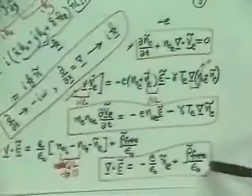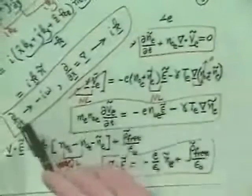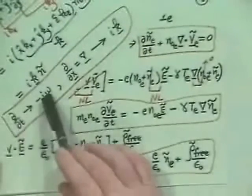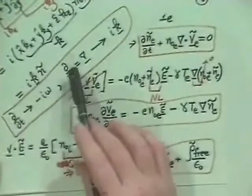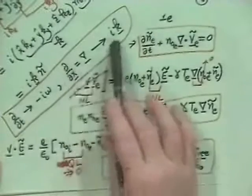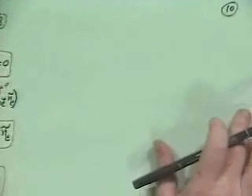So the equation — the perturbed or oscillating momentum balance equation and a perturbed Gauss's law. What we want to do is make use of these handy tricks: partial with respect to T goes to iω, and del goes to iK. So we'll stick those in these equations.